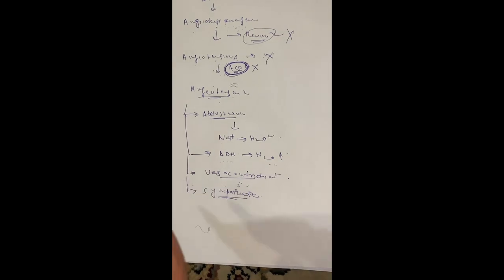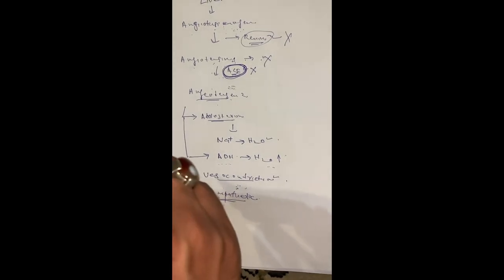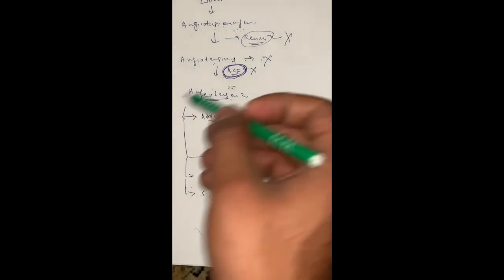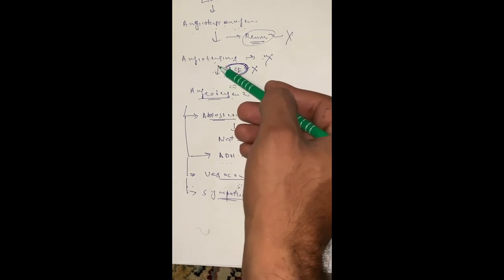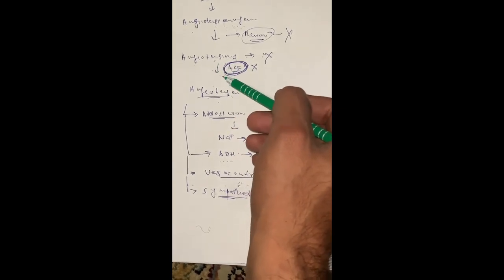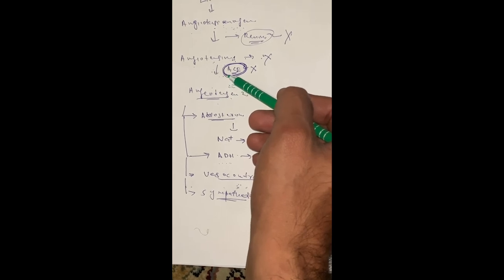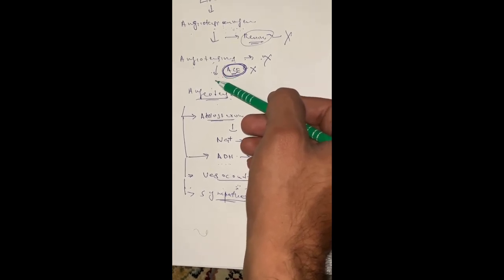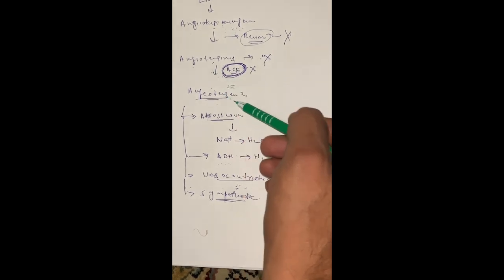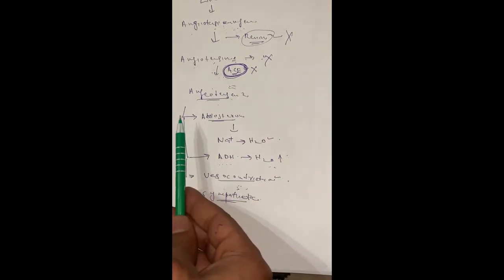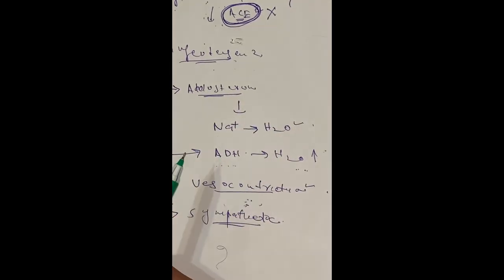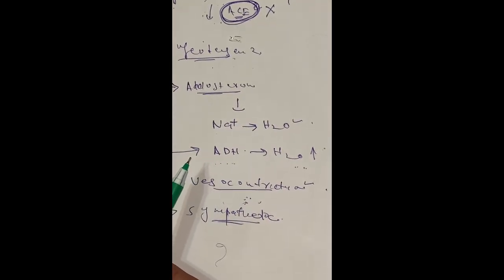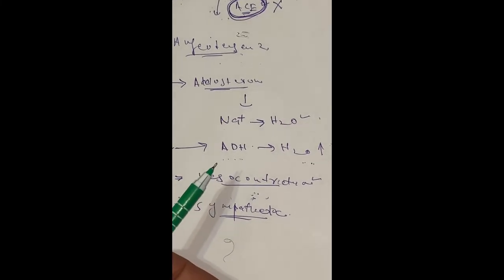For a quick review: when blood pressure is low, the kidney causes the release of renin from the juxtaglomerular cells. Renin activates angiotensinogen — released from the liver — into angiotensin I. Angiotensin I enters the lungs, where ACE present in the endothelium converts it into angiotensin II. Angiotensin II causes the release of aldosterone from the adrenal gland, which causes sodium reabsorption. Water follows sodium, so venous return increases, cardiac output increases, and blood pressure rises.